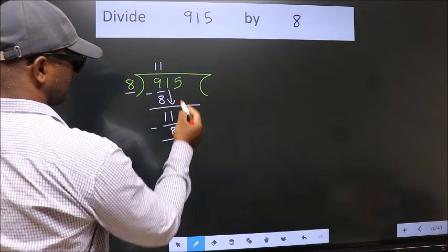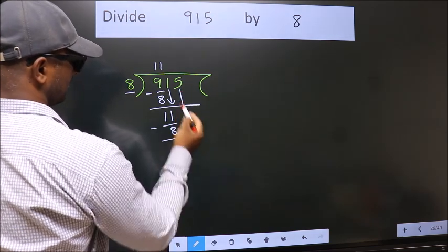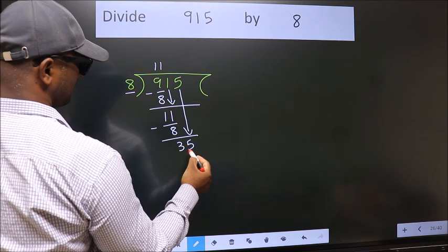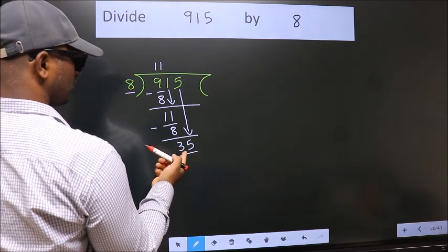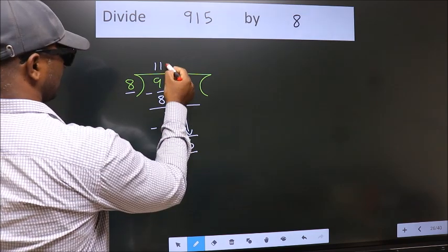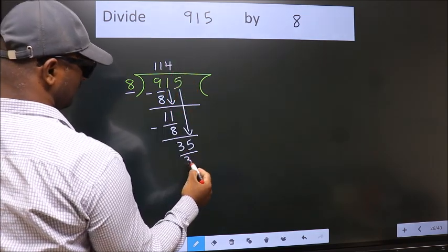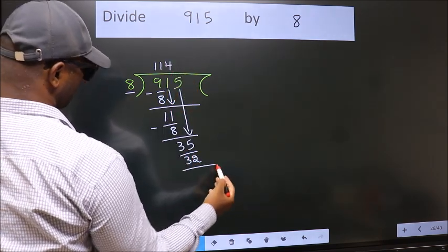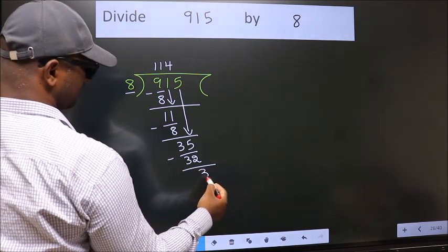After this, bring down the beside number. 5 down, so 35. A number close to 35 in the 8 table is 8 fours 32. Now we subtract. We get 3.